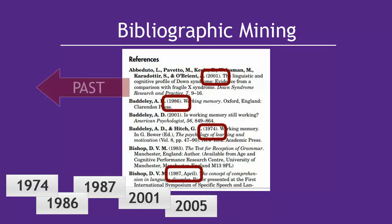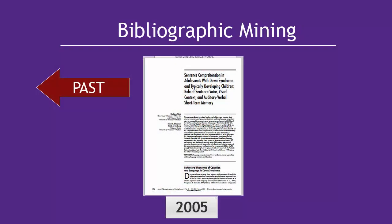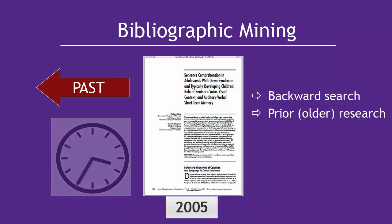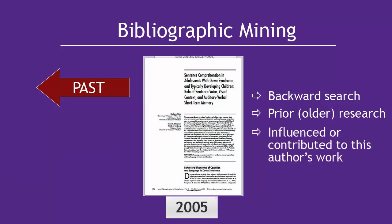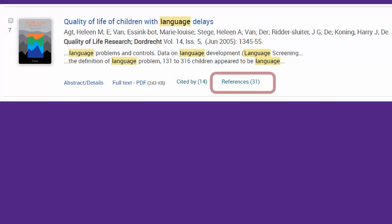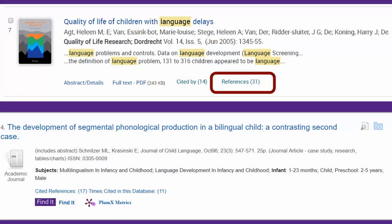These articles will be older than the article you have in hand. This technique is sometimes called Backward Searching because you are looking into the past and finding sources of information that influenced or contributed to the author's work in some way. Some ProQuest and EBSCO databases include the cited references in the results list view, which will link you directly to the articles in the original article's bibliography.